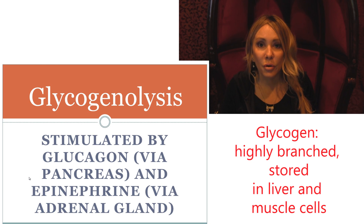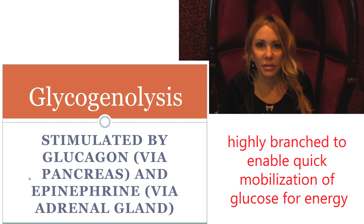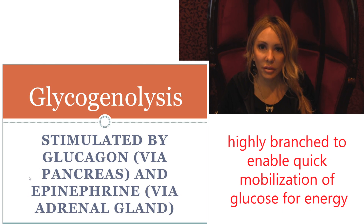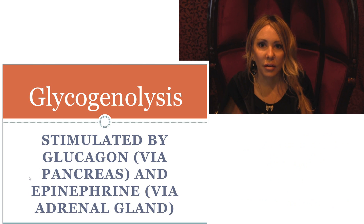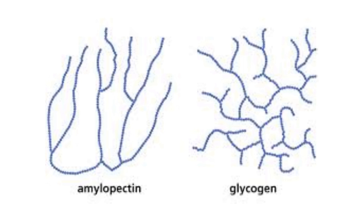We're going to mobilize glucose all at once from the different branch points, with multiple enzymes working on this storage molecule simultaneously. That's why glycogen is highly branched — that's the function of being highly branched, as opposed to amylopectin in a plant, which is still branched but not as much, because a plant doesn't need to fight a bear or evade something really fast.